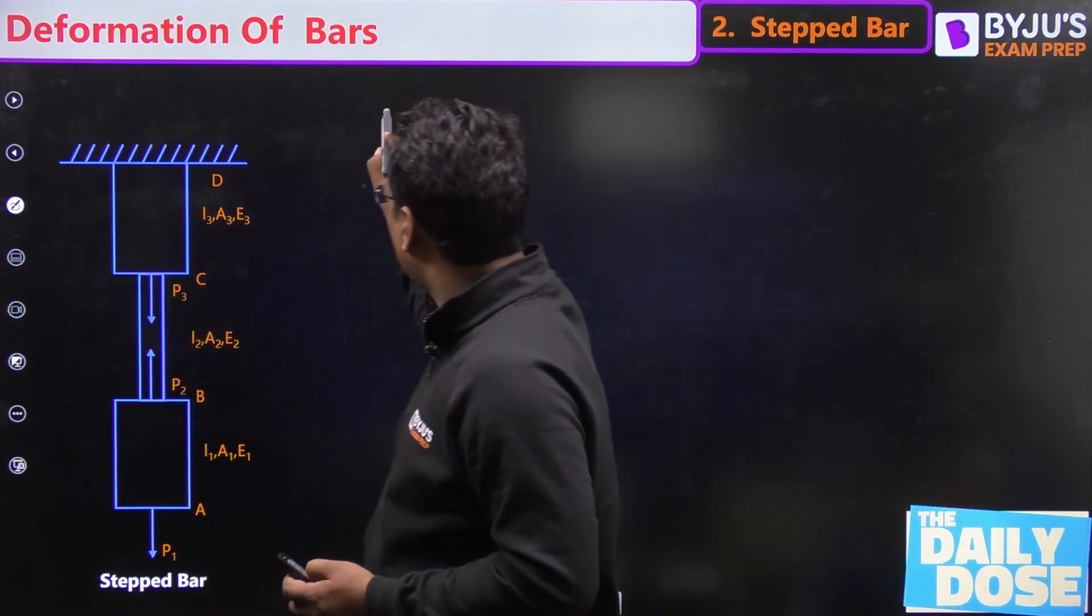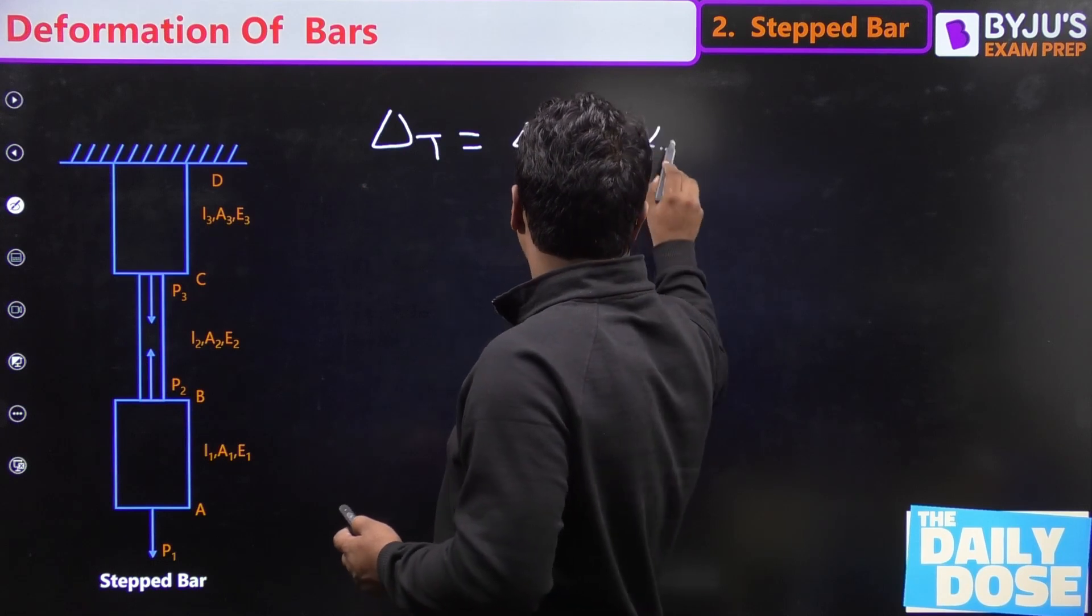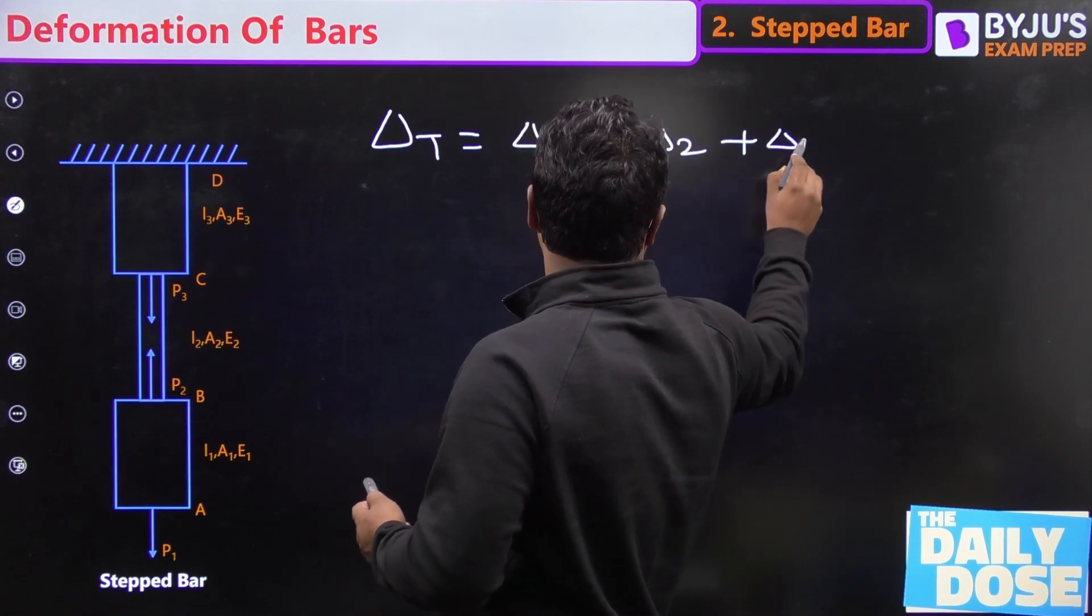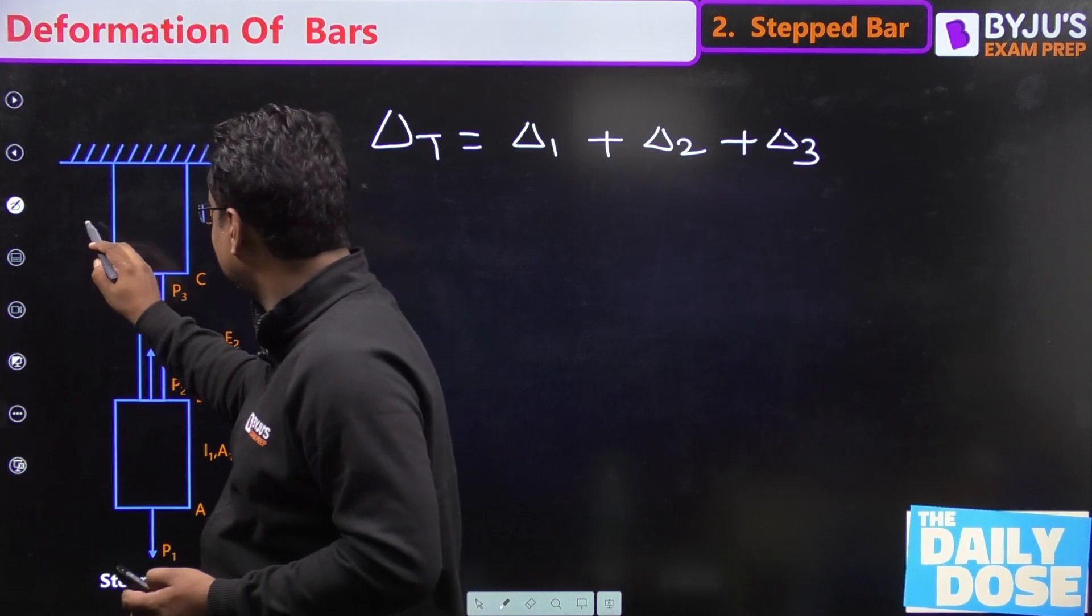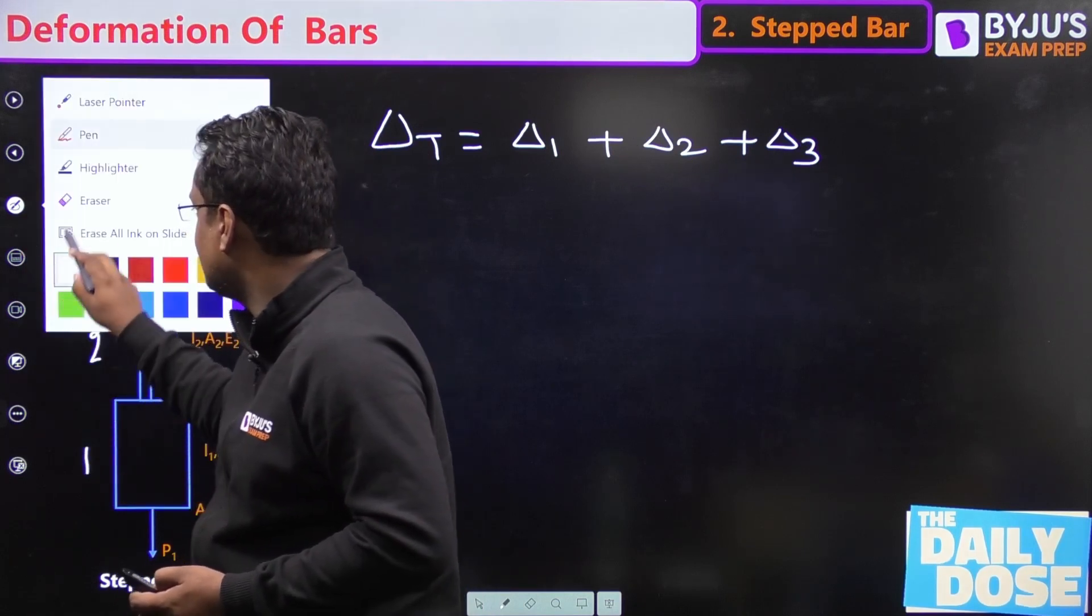First of all, the total deformation will be delta 1 plus delta 2 plus delta 3. I am taking this as third bar, this is a second, and this is a first bar.